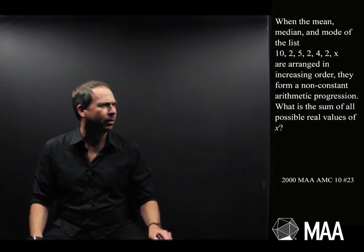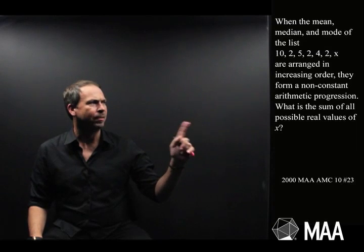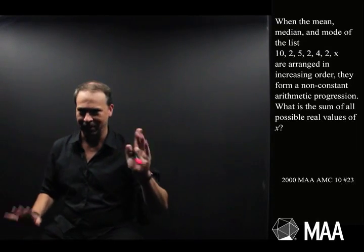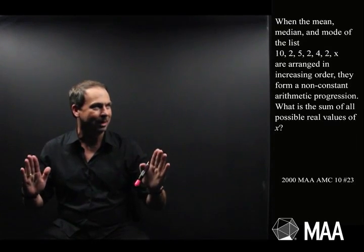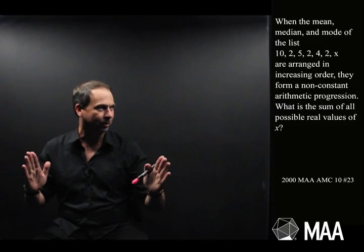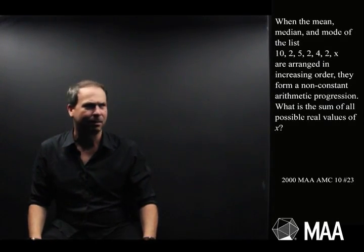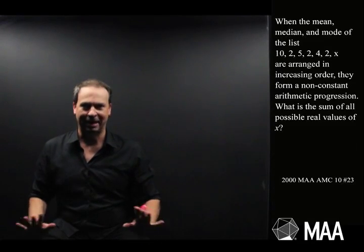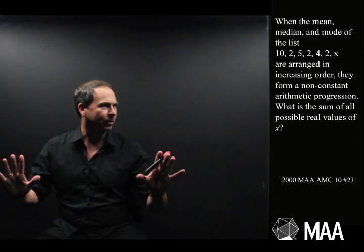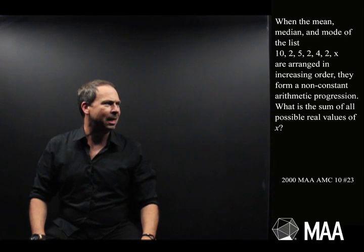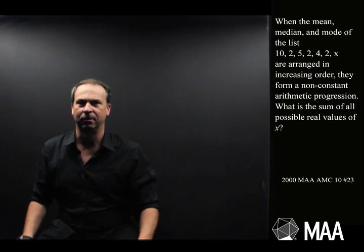Hang on, what's arranged in increasing order? When the mean, median, mode of the list are arranged in increasing order. Okay, so those three things. When those three things of that list are arranged in increasing order, they form a non-constant arithmetic progression. I'm going to have to take in what that means, but I'll do that in a moment. The question is, what is the sum of all possible values of x?